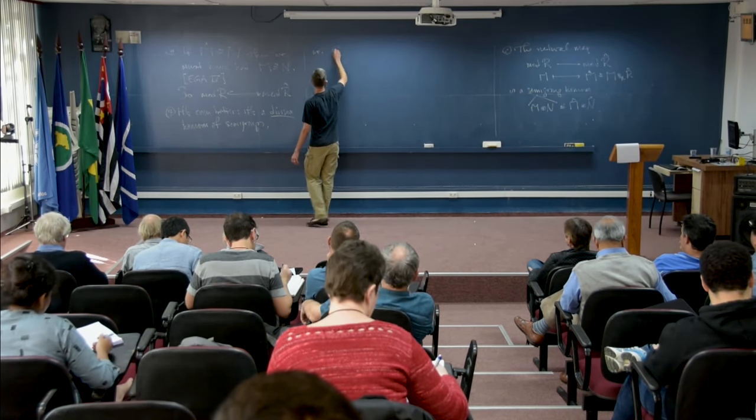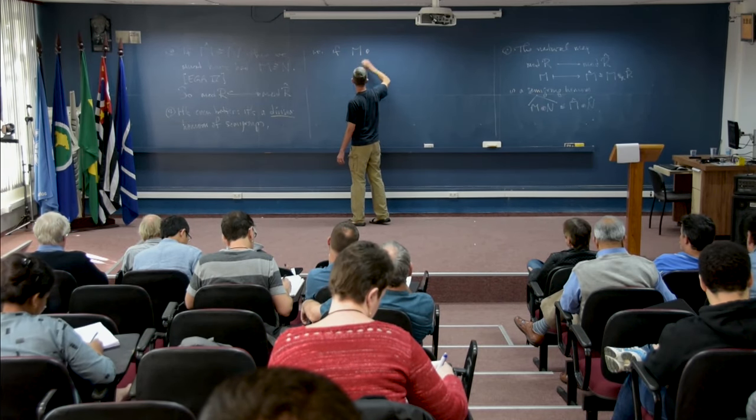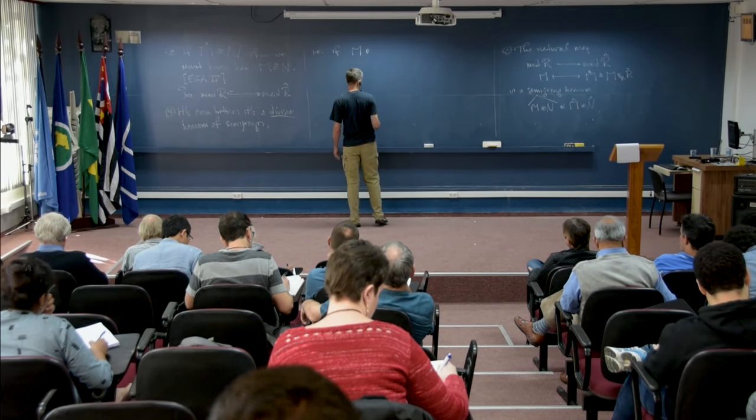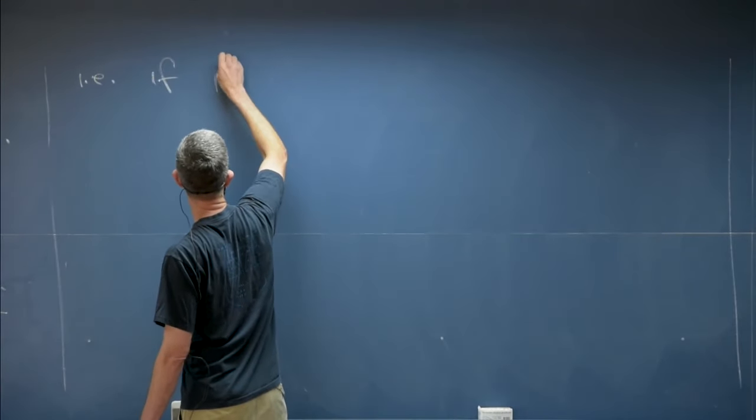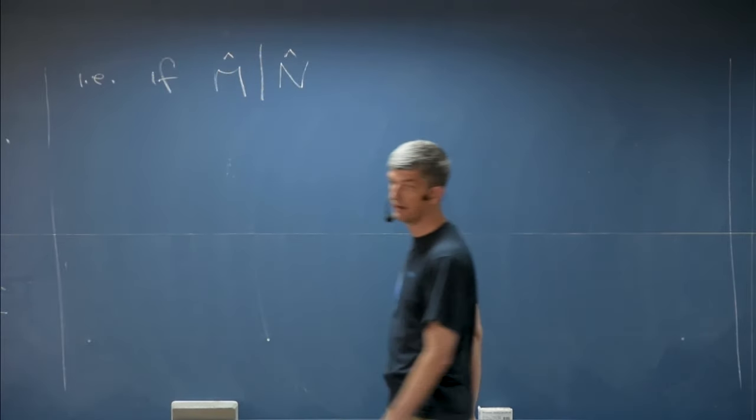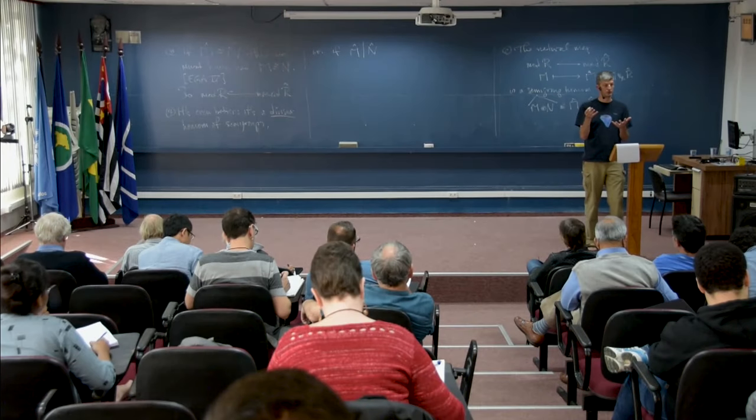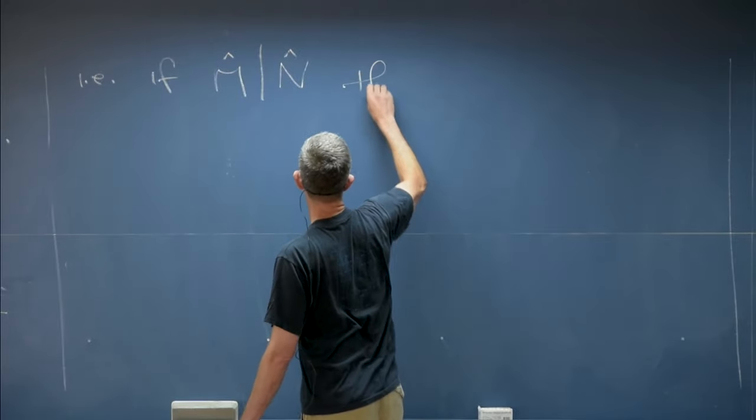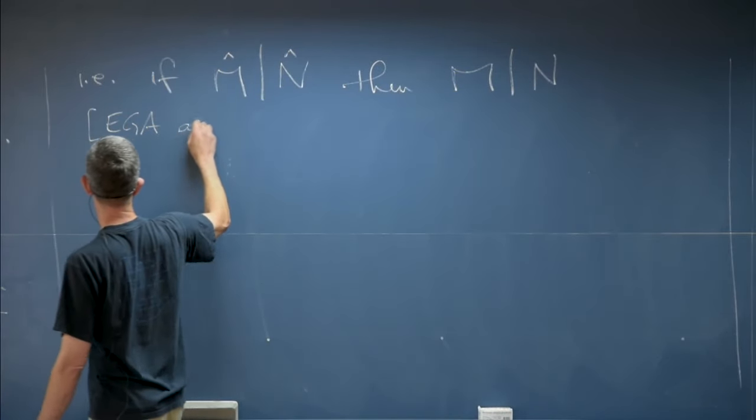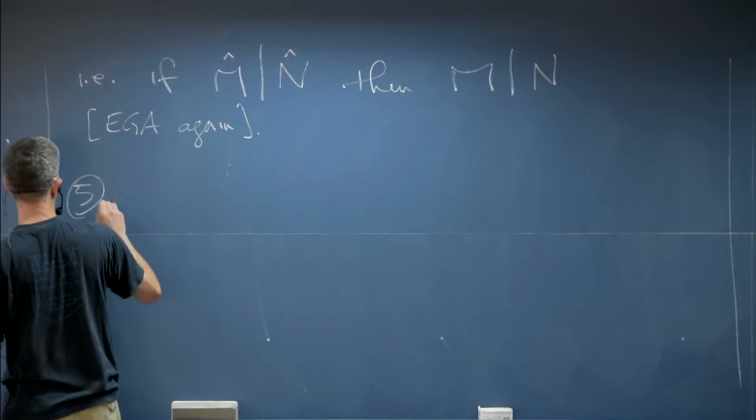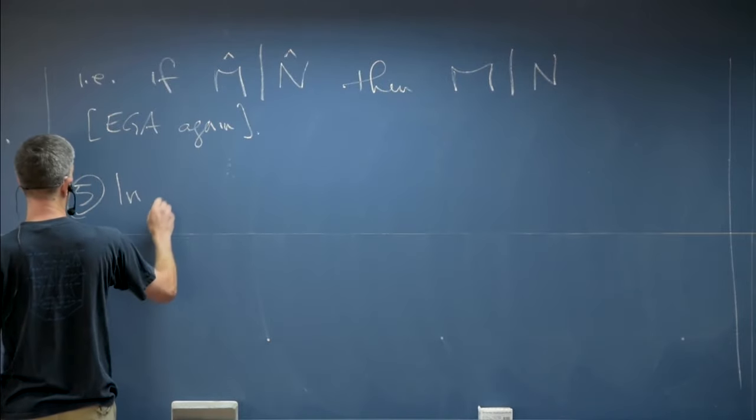It's a divisor homomorphism of semi-groups meaning if M hat divides N hat, that is after passing to the completion M is isomorphic to a direct summand of N, then M was already a direct summand of N. And this in fact is in the same place.